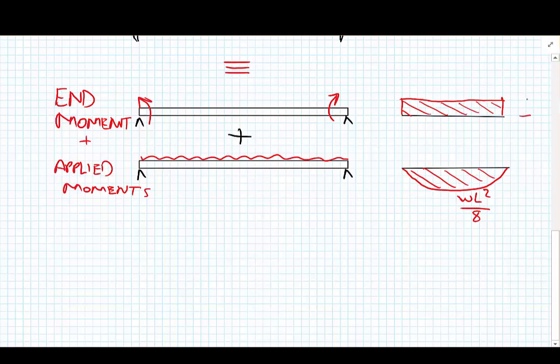Later on we're going to show how you can calculate these moments or where you can find them readily in textbooks and they're generally referred to as fixed end moments. This becomes very useful later. So summing these two bending moments together is the bending moment we've just shown before.